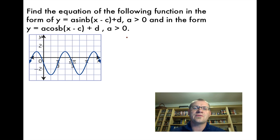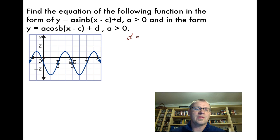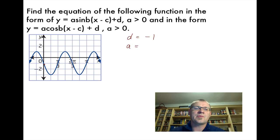The easiest value to find is d — how far the middle of the graph has moved up or down. The middle has been shifted down one unit from the x-axis, so d = −1. Next, a is just the amplitude, the distance from the middle to the maximum. From the middle at −1, we move up 2 units to the top, so a = 2.